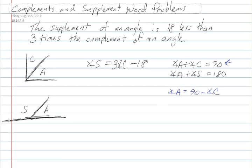Then angle A is equal to 90 minus angle C. Then by substitution, 90 minus angle C plus angle S is equal to 180 degrees.